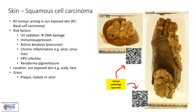Squamous cell carcinoma is the second commonest tumor that arises in sun-exposed skin after basal cell carcinoma. UV radiation causes DNA damage, which then predisposes to the formation of this cancer. Other risk factors include immunosuppression, precursor lesions such as actinic keratosis, long-standing inflammation — for example in ulcers or a sinus tract — HPV infection, and certain genetic conditions such as xeroderma pigmentosum.